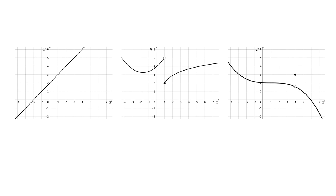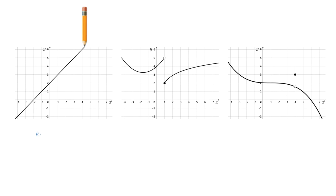Many people are told to imagine a pencil tracing along the graph. If we do this for the first graph, it looks like we don't have to pick up the pencil. If that is how we identify continuity, then this function looks continuous for all values of x.